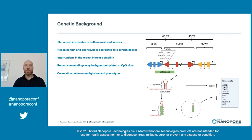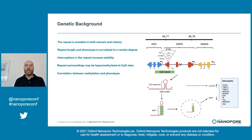Longer repeats generally result in worse phenotype, but in recent years it has become clear that the CpG island around the repeat may become hypermethylated in DM1 patients, and that this also affects the phenotype. So the aim with this study was to determine if we can use nanopore sequencing to get a more detailed image of the CTG repeat and the surrounding methylation, and ultimately to provide a better diagnostic for our DM1 patients.